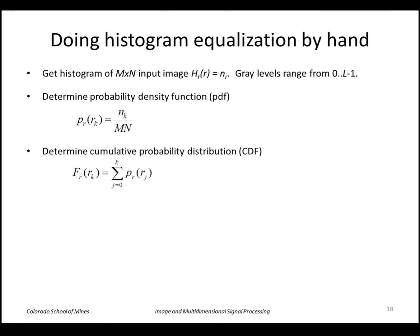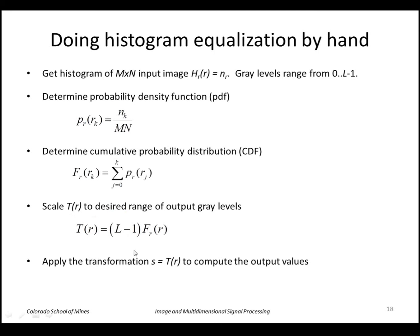We'll divide by the total number of pixels to get a PDF, then calculate the CDF by summing the PDF, and we'll multiply by L minus 1 to get our transformation function, and then we can go ahead and apply that transformation to compute the output values.